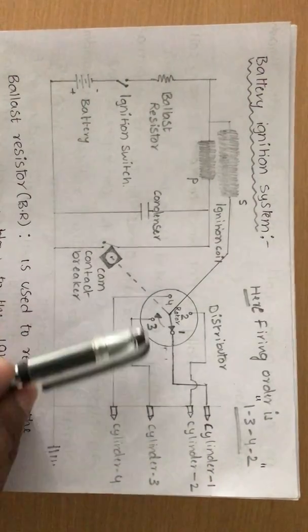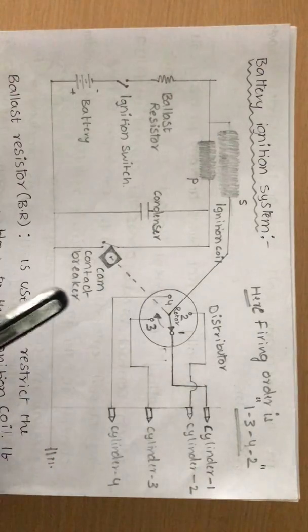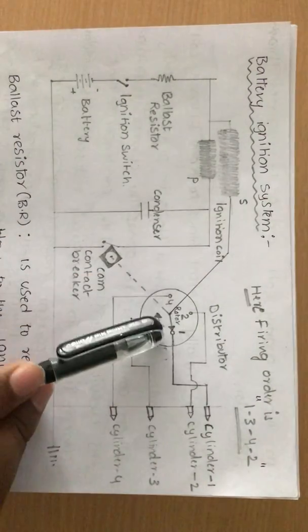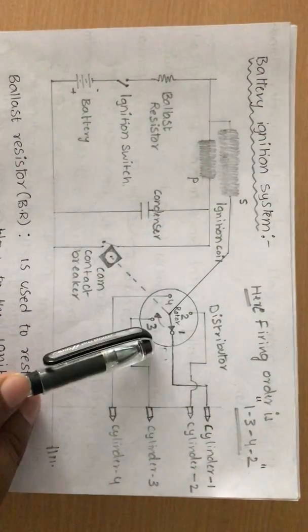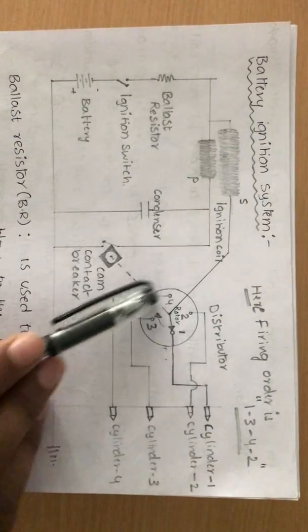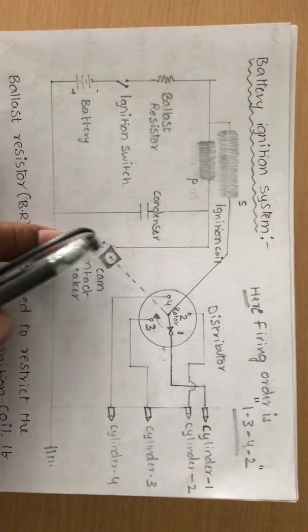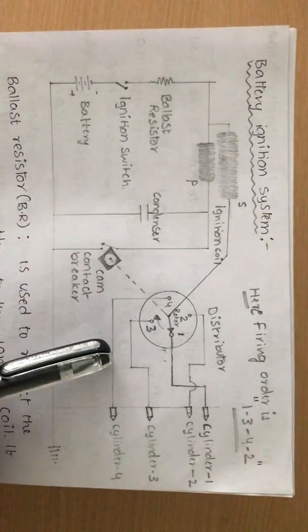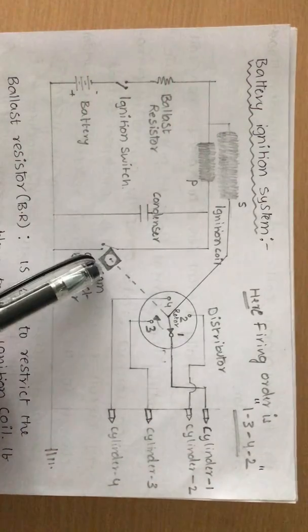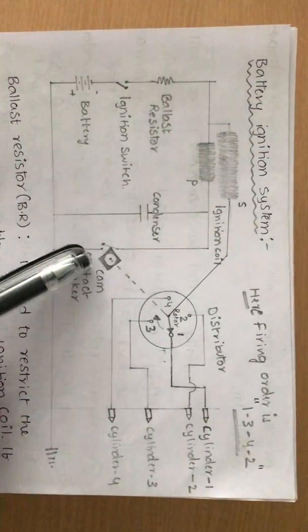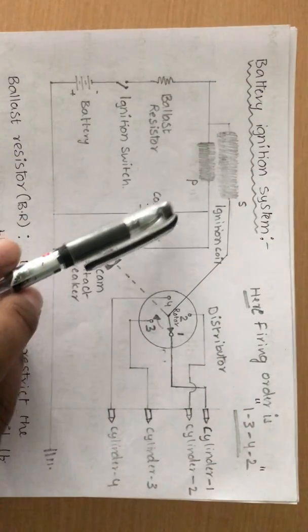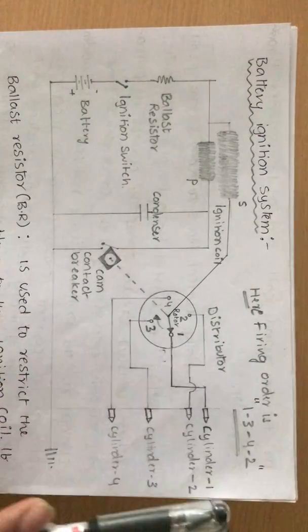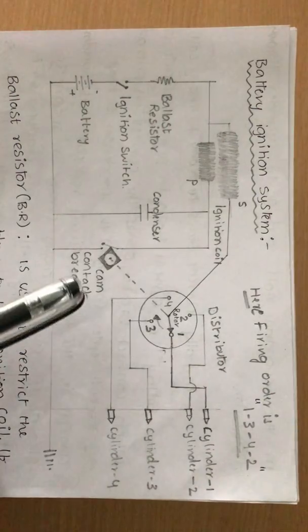The high voltage produced in the secondary coil is sent to the distributor. The distributor takes care of when to supply, where to supply, and which cylinder needs firing. The cam is connected to the contact breaker, and the cam is connected to the crankshaft, which is connected to the piston. So piston movements are traced — whenever a spark is needed, the cam opens the contact breaker, reducing current in the primary coil, inducing high voltage in the secondary coil, and producing the spark at the corresponding spark plug.